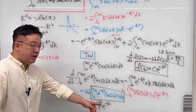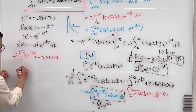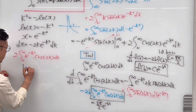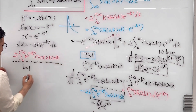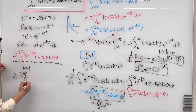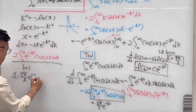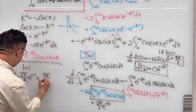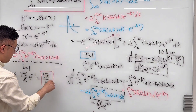In our case, b equals 1. So our integral is 2 times (√π / 2) times e to the power of negative 1. The 2's cancel, giving us the square root of pi over e. So this is the answer.